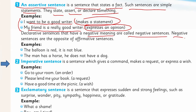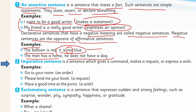Negative sentences are the opposite of affirmative sentences. For example: 'The balloon is red' — that is affirmative. 'It is not blue' — the word 'not' indicates a negative sentence. Similarly: 'The man has a horse' is affirmative, and 'He does not have a dog' is negative. These negative sentences totally deny a fact or statement by using 'does not' or 'is not.'